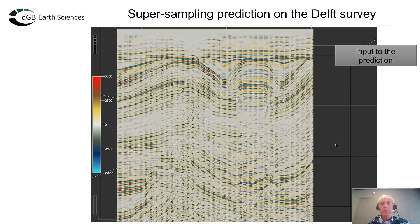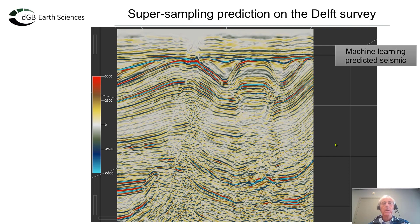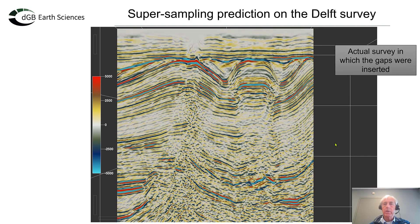Looking at the supersampling results: step one shows the ground truth so we can compare interpolation quality. This is the data with every other trace blanked, and this is how the model interpolated and reconstructed it. Comparing with the original data, you can see that the reconstruction is near perfect.